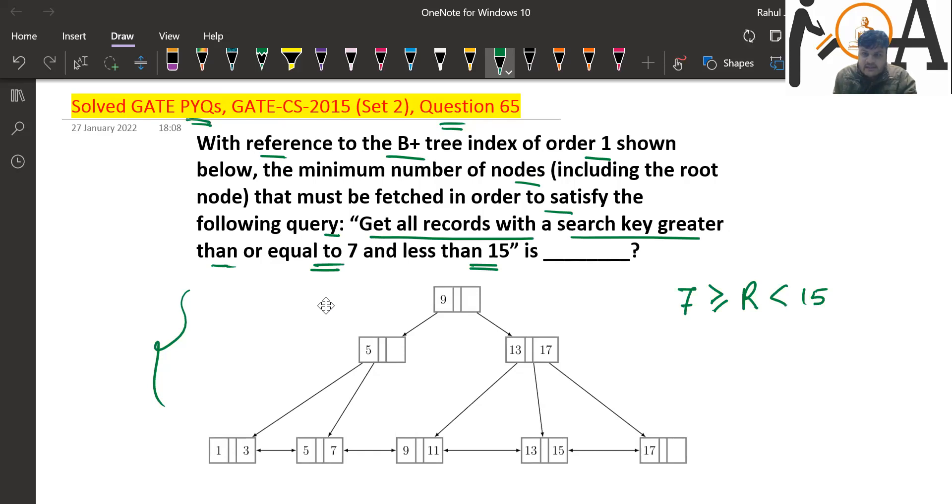The query is get all records with a search key greater than or equal to 7 and less than 15. It means that we need records which are less than 15 but greater than or equal to 7. So it should be greater than or equals to 7 but less than 15, inclusive of 7, 8, 9, 10, 11, till 15. This might be the search key and that record I need.